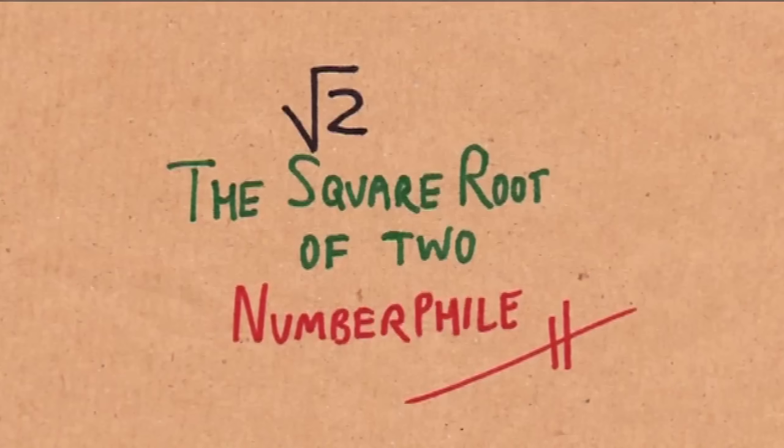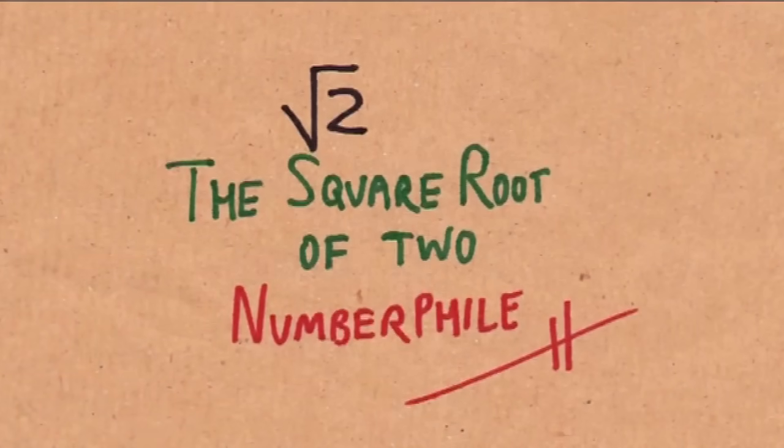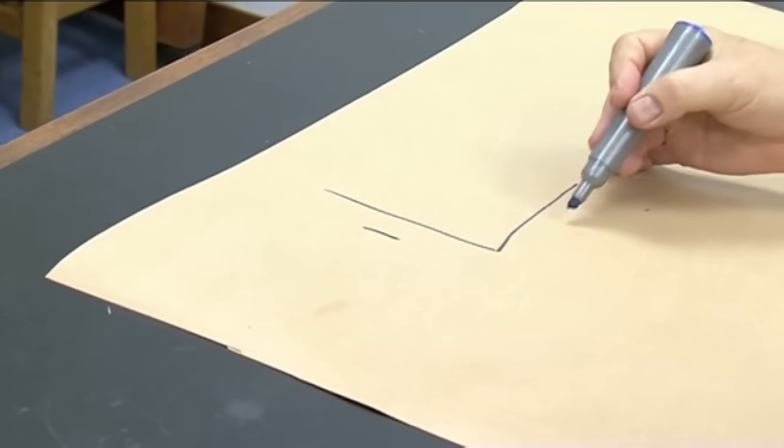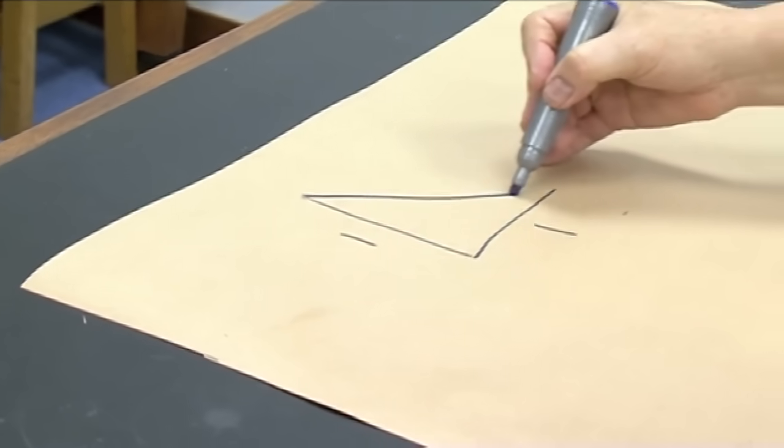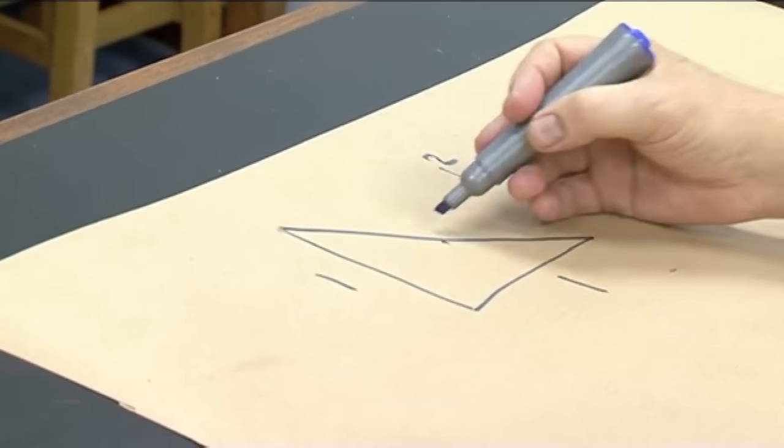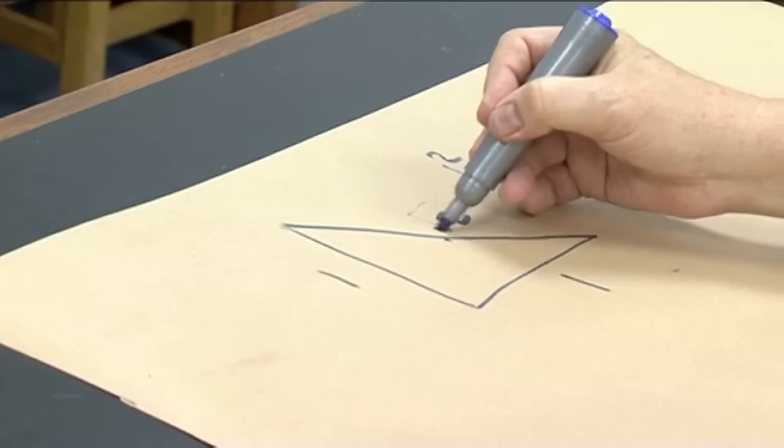The square root of 2 is about 1.41 something or other. And it's the number you get if you work with Pythagoras theorem, which said that if you have a unit length along there and a unit length along there, the square of this length plus the square of that is that, this length is root 2.